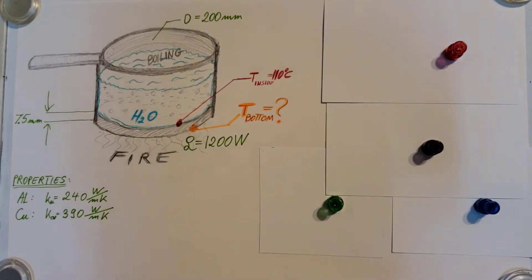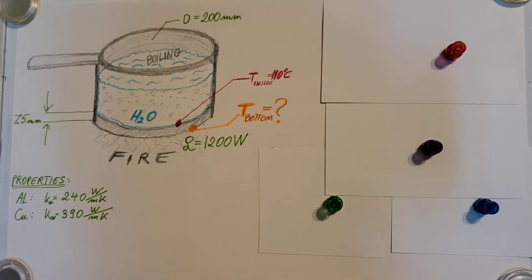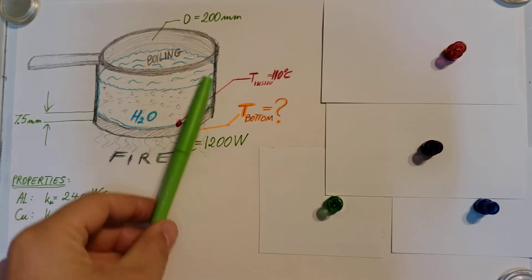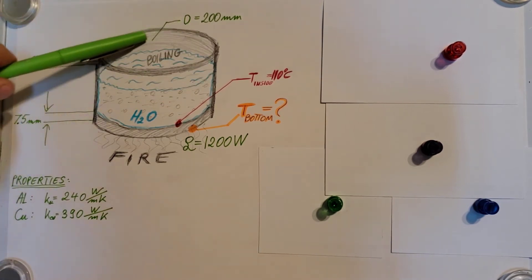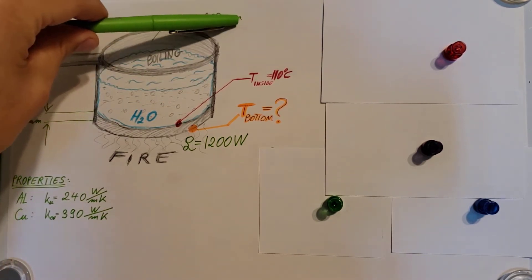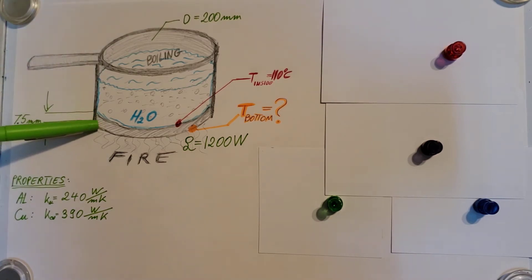This is a heat transfer problem where we are dealing with a pan that is placed on a stove on fire and we are boiling water inside it. We know some dimensions: the diameter of the pan is 200 millimeters, and the thickness of the bottom of the pan, just the bottom layer, is 7.5 millimeters.